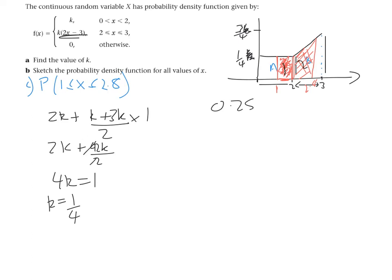And for rectangle number 2, sorry, trapezium number 2, shape number 2, we have our first height here of 1 quarter. So the next height, we need to substitute in 2.8 into this function up here.